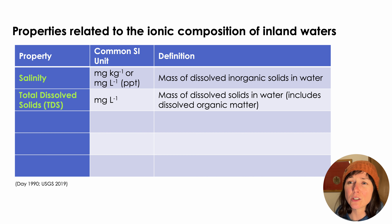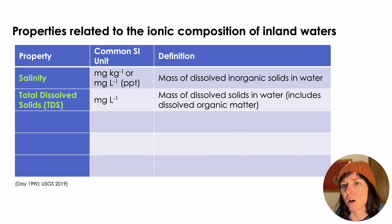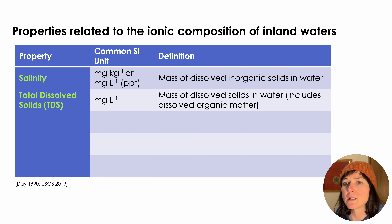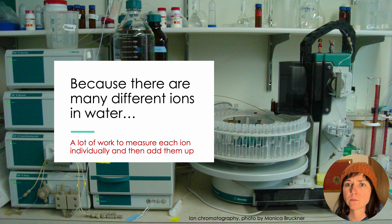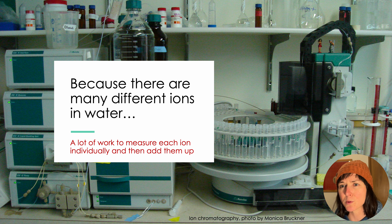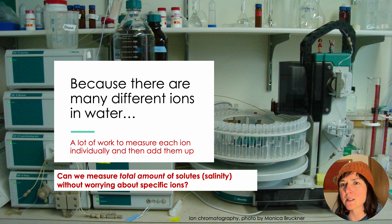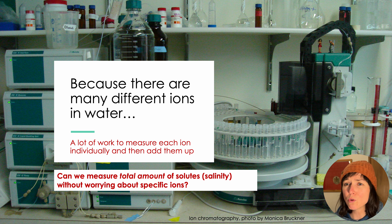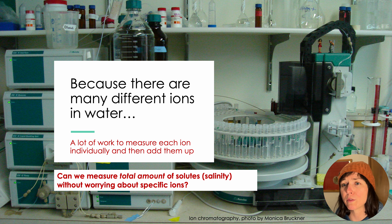Salinity is often considered interchangeable with total dissolved solids, or TDS, but TDS includes the mass of dissolved organic matter. This subtle difference is often insignificant, but becomes important where DOM concentrations are high, as dissolved organic matter can affect density. Because there are many different ions in water, comprehensively measuring the complex mixture of constituents in water is a massive undertaking. Measuring ion concentration often involves expensive analytical equipment, such as the ion chromatograph shown here. Therefore, it's useful if there is a way to approximate salinity using a simpler method than measuring and adding up all of the specific ions.